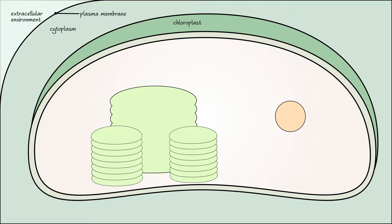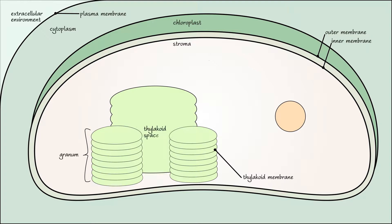There are three membranes: the outer membrane, inner membrane, and thylakoid membrane. A stack of thylakoid membranes is known as a granum. Although the three membranes separate the chloroplast into three compartments, we only need to focus on two of them. The stroma is located within the inner membrane but outside the thylakoid membrane, and the thylakoid space is located within the thylakoid membrane.